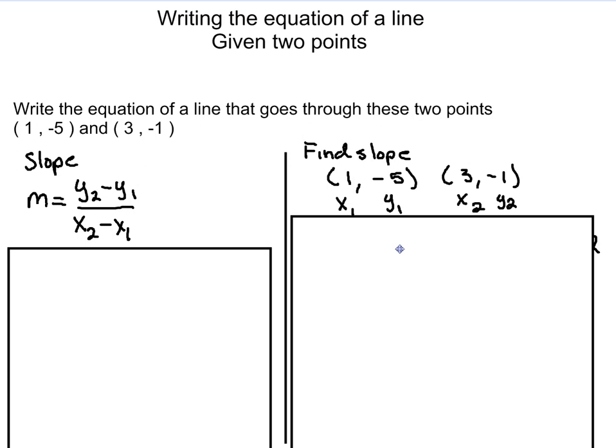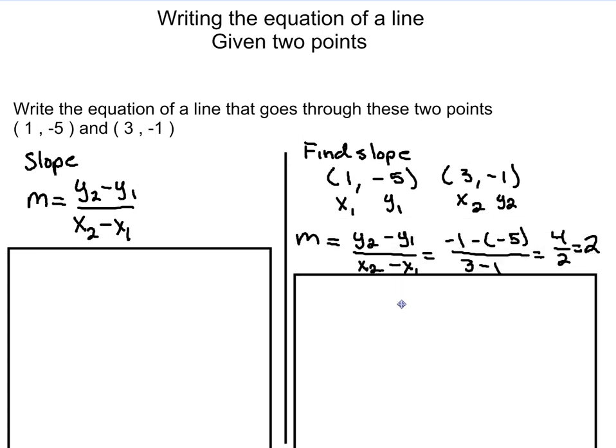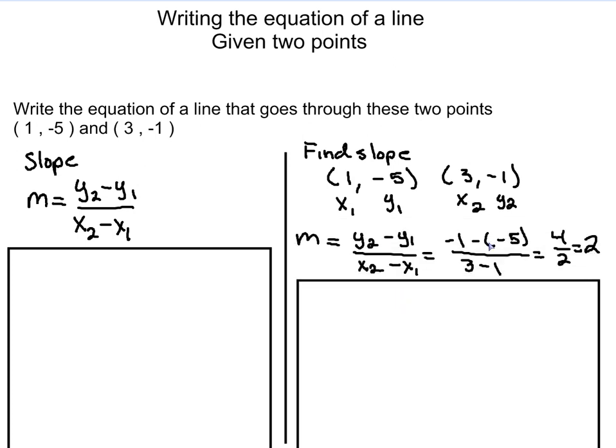So we're going to label our points, and we're going to find our slope. Let's plug my information in. So I have (-1 - (-5))/(3 - 1). -1 minus -5, those two negatives become a positive, so that's -1 + 5, which is 4. 3 minus 1 is 2. So my slope in this equation is 2. You notice I also labeled my points and plugged them in, labeled my equation here.